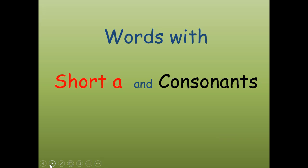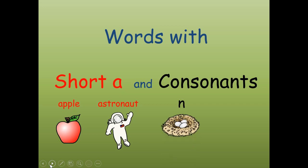All right, let's get started. Words with short A, as in apple. Say it, apple. And astronaut. That's the person that flies in space. And the consonants N, n-n-n-nest, and D, d-d-dog.